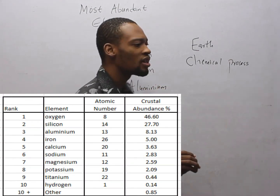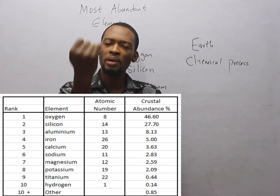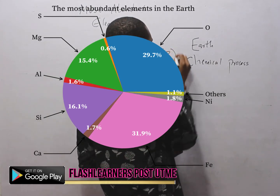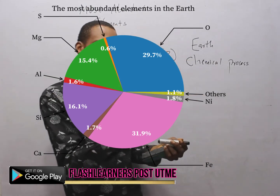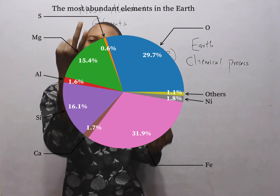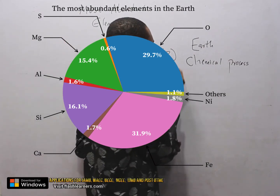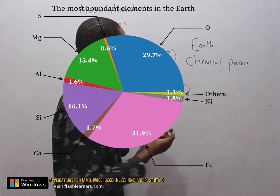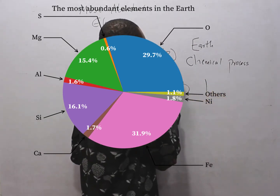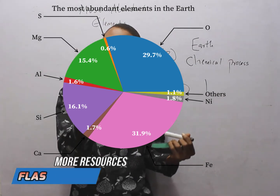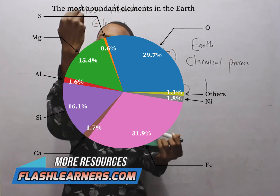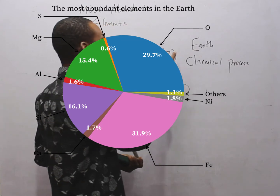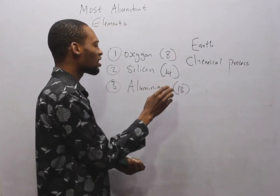Now looking at the first 20 elements, counting through: hydrogen, helium, lithium, beryllium, boron, carbon, nitrogen, oxygen — so the atomic number of oxygen is 8. Continuing: fluorine, neon, sodium, magnesium, aluminium — so the atomic number of aluminium is 13. And silicon is 14. So the number of protons: oxygen has 8, silicon has 14, and aluminium has 13.